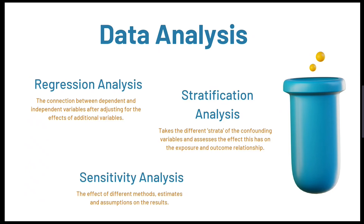The next type of analysis is stratification analysis, which investigates how the connection between the exposure and outcome is affected by different strata of the confounding variables. For example, participants could be stratified by their smoking habits to see what impact this has. A third type is sensitivity analysis, which assesses how much the results could be affected due to different assumptions, methods or estimates. By inputting these differences the researchers can see if this causes a change in the results.